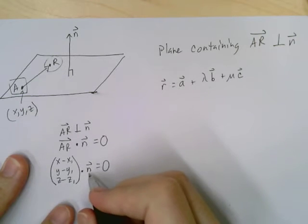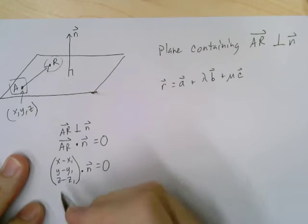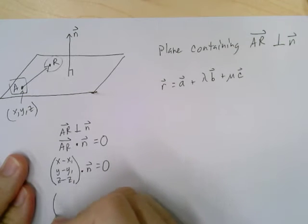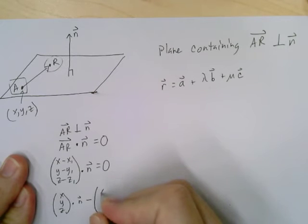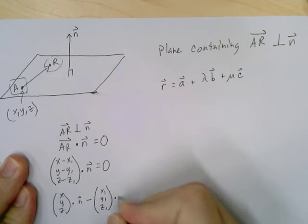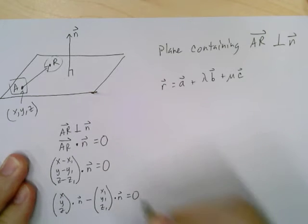Remember the dot product we learned a couple lessons ago is distributed. So I can rewrite this as XYZ dot product N minus X1, Y1, Z1 dot product N is still equal to zero. I know you don't care yet.